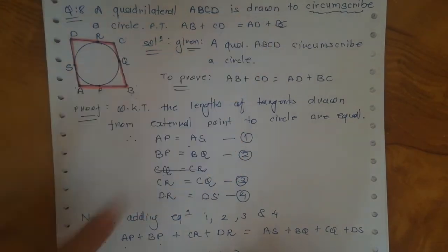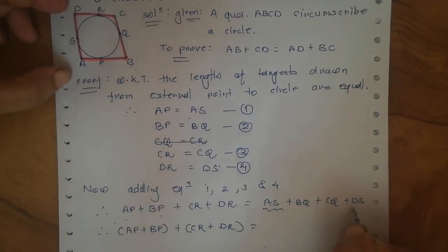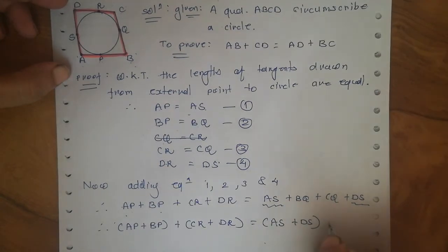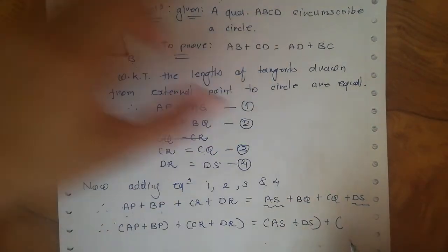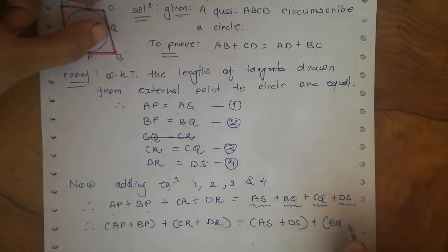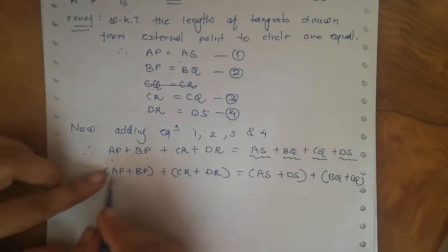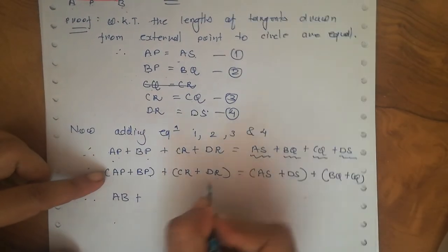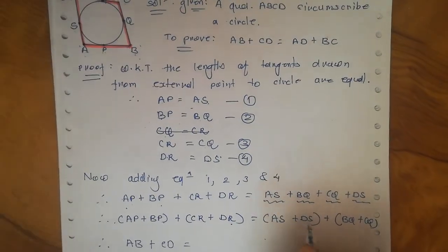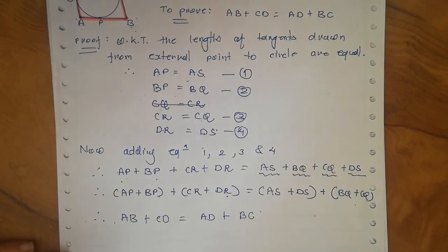Putting brackets to avoid confusion: on the LHS we have (AP plus BP) plus (CR plus DR), which gives us AB plus CD. On the RHS, (AS plus DS) gives AD, and (BQ plus CQ) gives BC. So the RHS becomes AD plus BC.